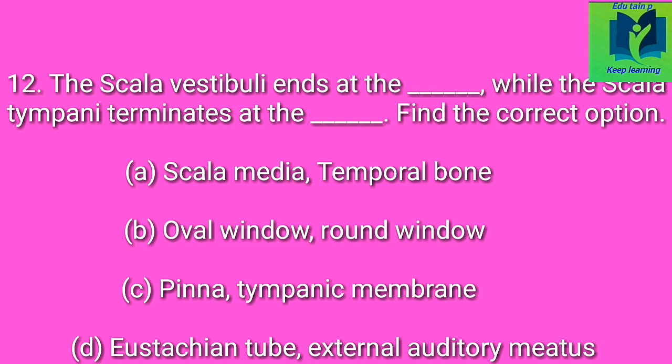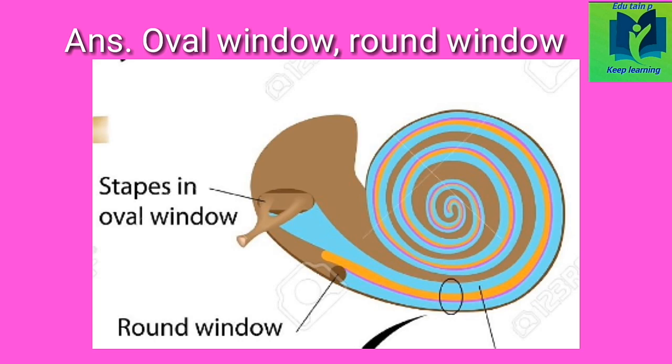The scala vestibuli ends at the dash, while the scala tympani terminates at the dash. Find the correct option. Option A: scala media and temporal bone. Option B: oval window and round window. Option C: pinna and tympanic membrane. Option D: eustachian tube and external auditory meatus. Answer: oval window and round window.